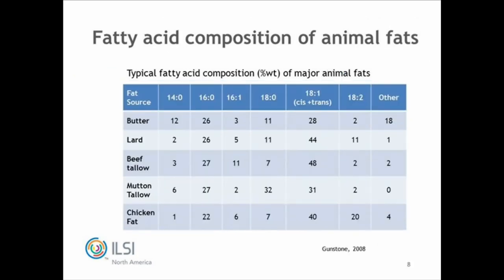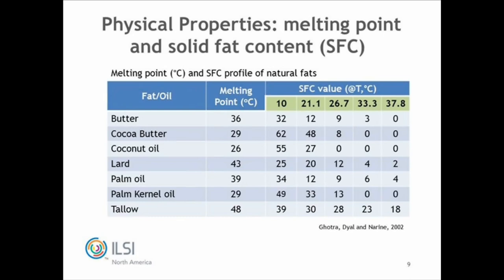Animal fats have different compositions. Butter has a very high amount of saturated fatty acids with shorter chains included. Beef tallow has a high content of C16 and C18, and a very high content of oleic acid. All I'm trying to get to is that this is what's in the cupboard of the food scientist in order to achieve a certain functionality — all these fats with naturally occurring fatty acid compositions. As a consequence of the molecular composition, you have fats with different melting points, from 48°C down to 26°C for coconut oil, and this melting point plays importantly into the functionality of fats.